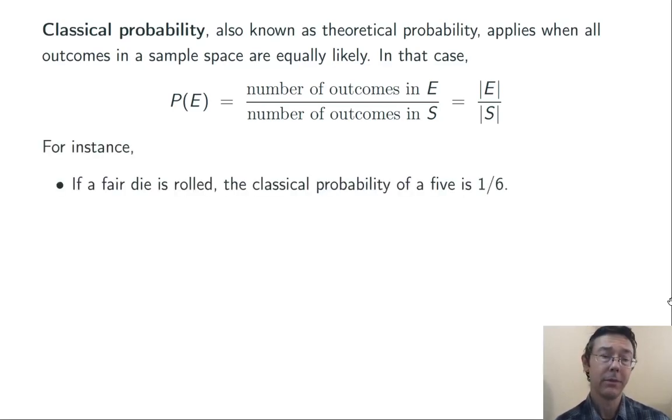A couple of examples. Roll a fair die. You've got six possible outcomes, all equally likely. If we're looking at the simple event E of getting a 5 on that single roll, there's one outcome in that event. So the classical probability is going to be 1 in 6.